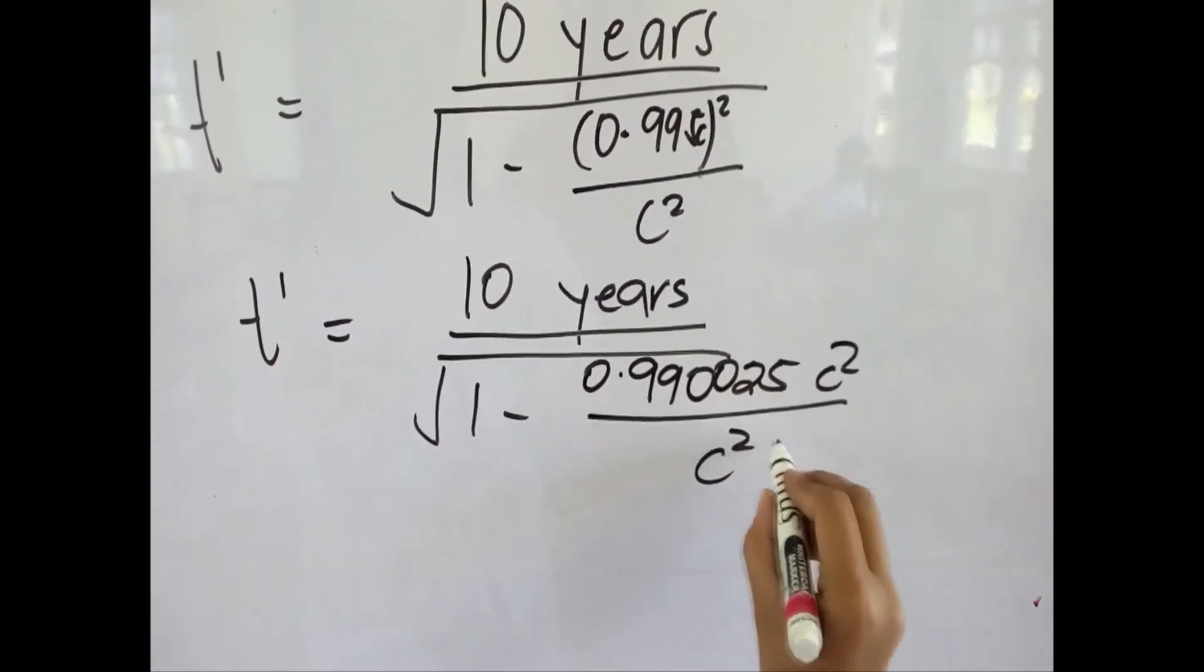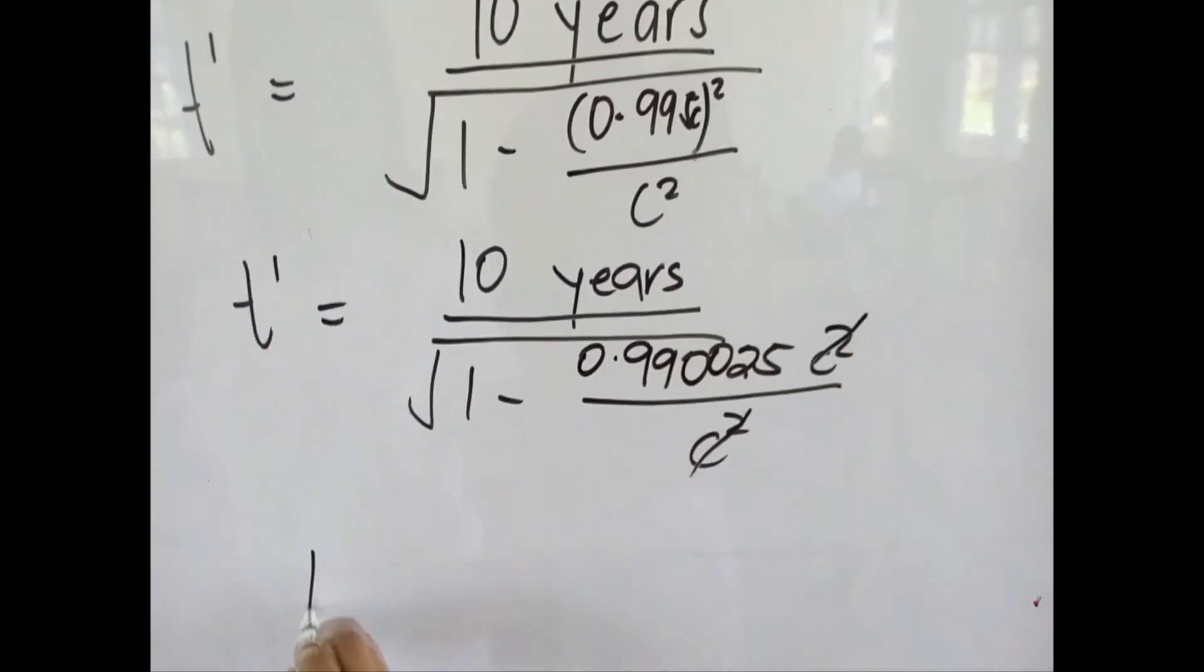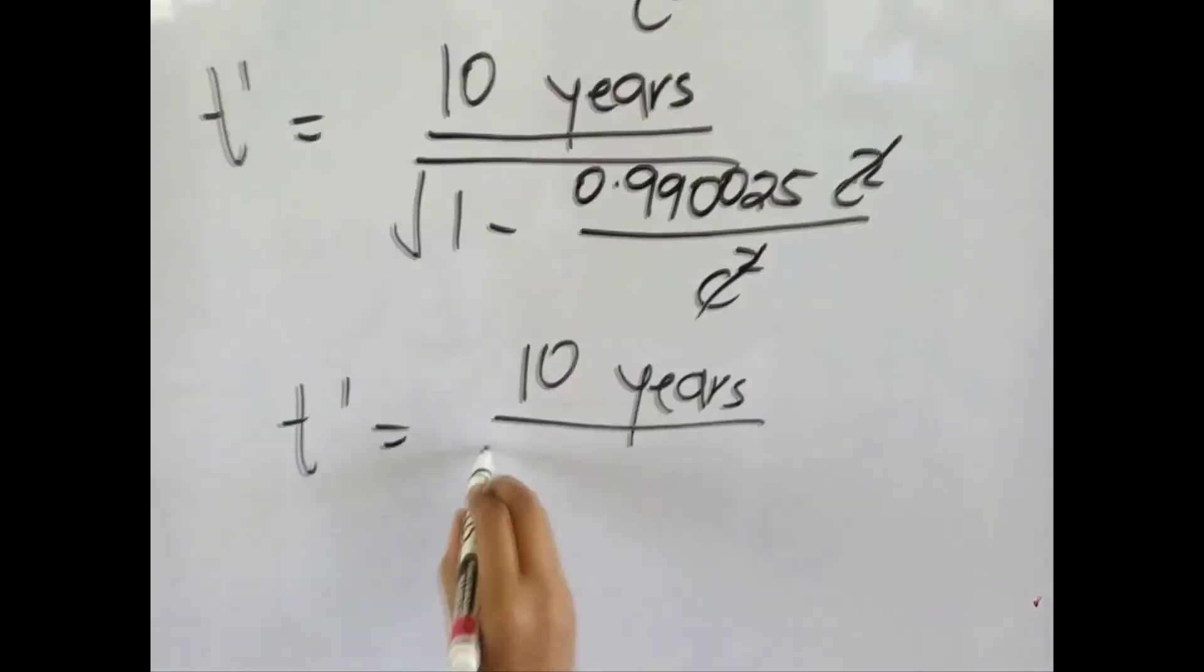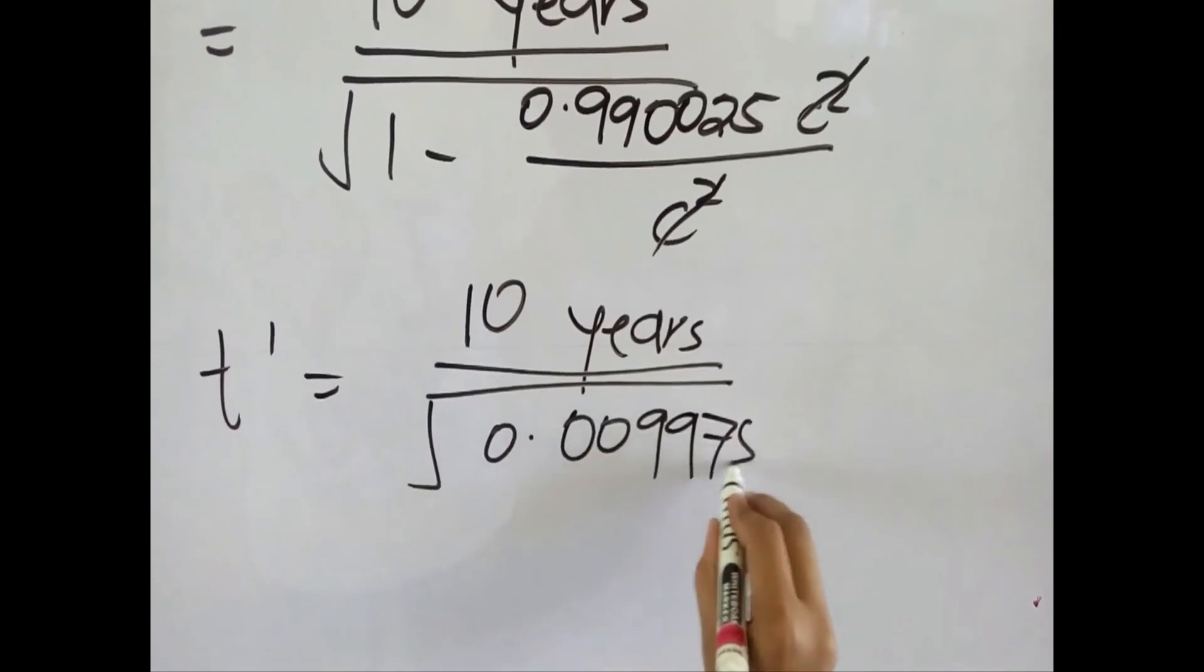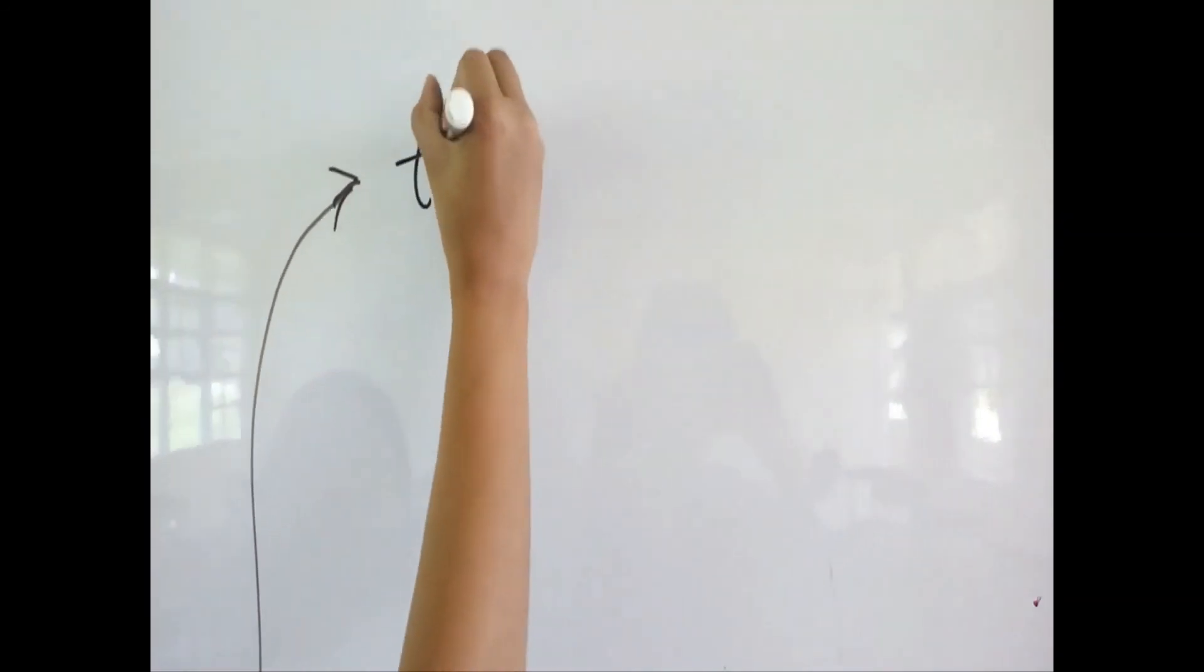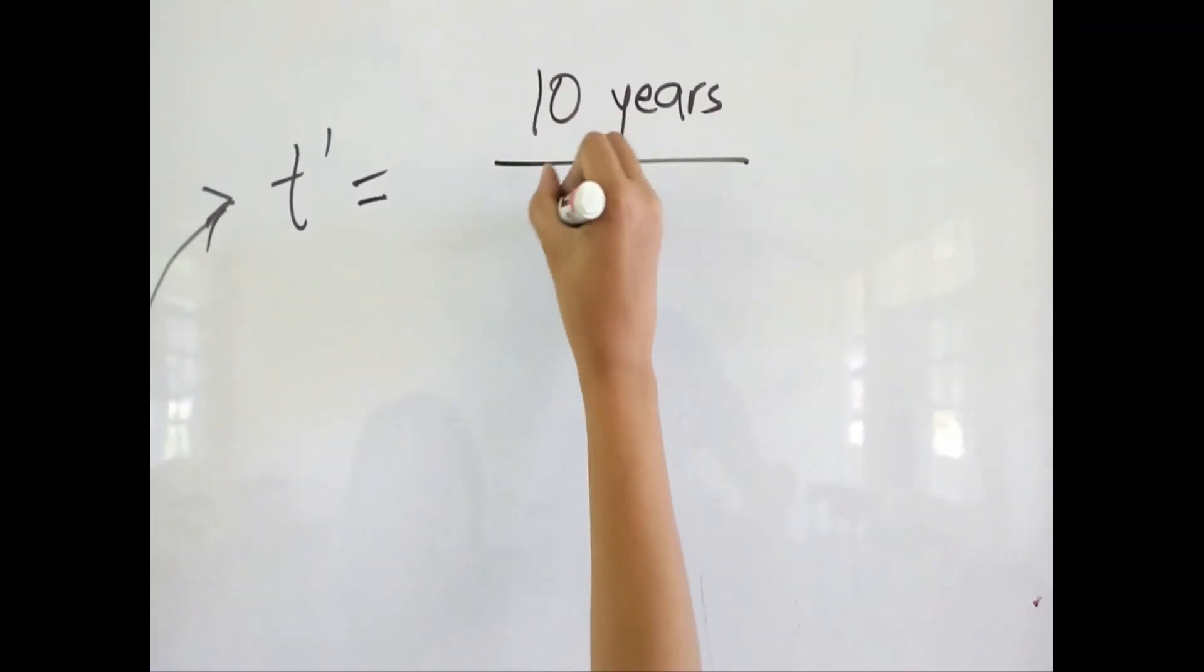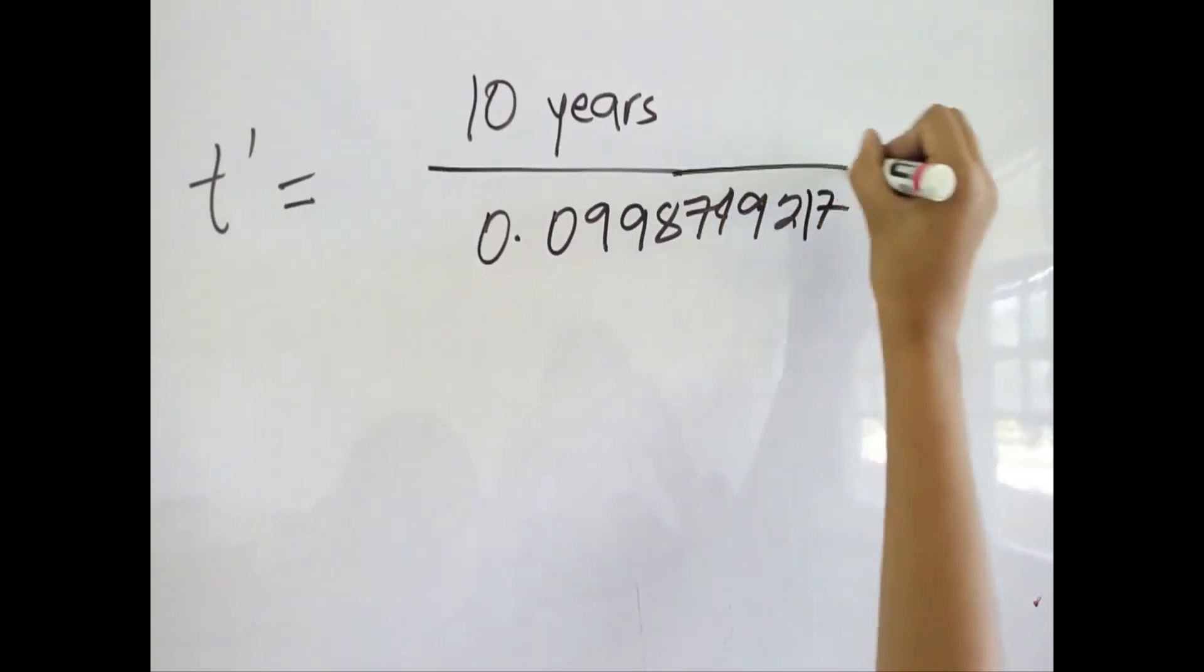Then cancel C squared, C squared, then T prime is equal to 10 years divided by the square root of 0.009975. So after which we get the T prime is equal to 10 years divided by 0.0998749217.